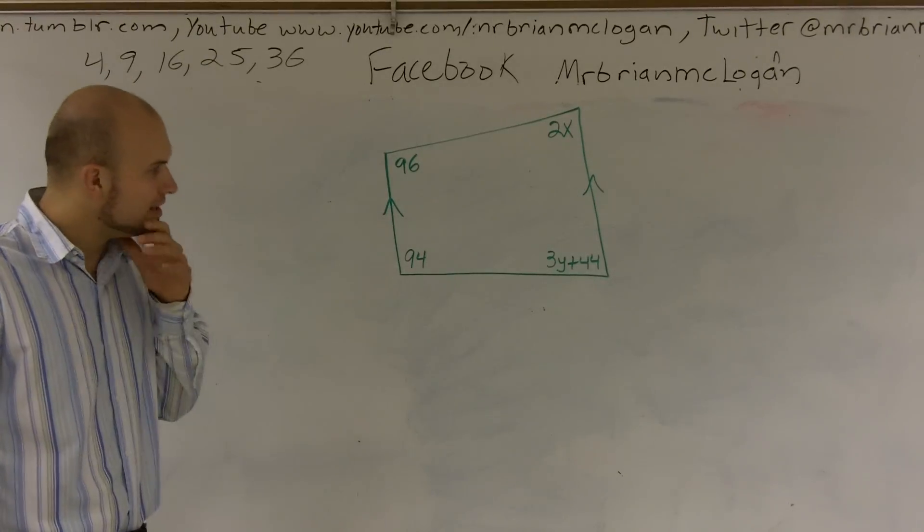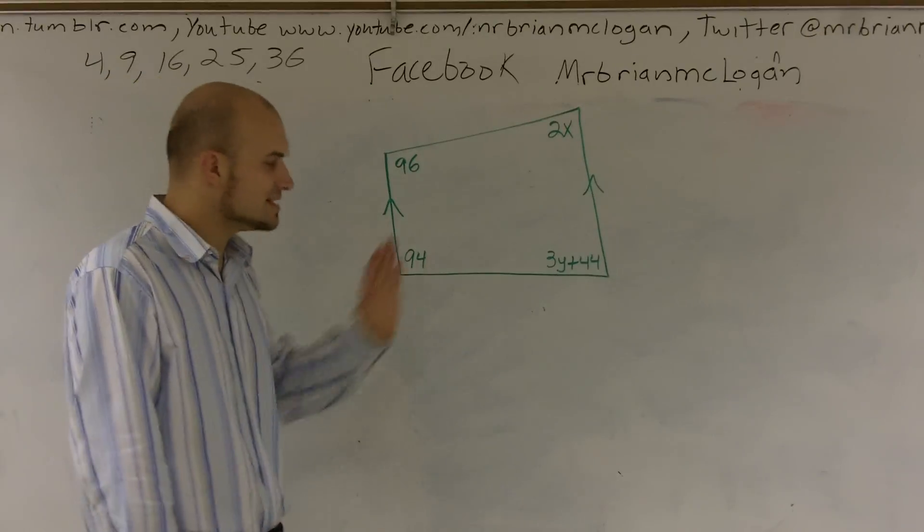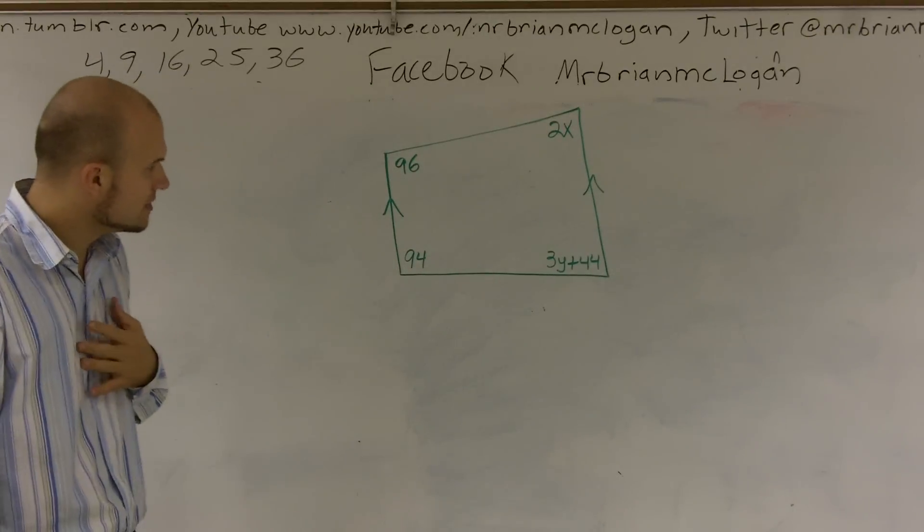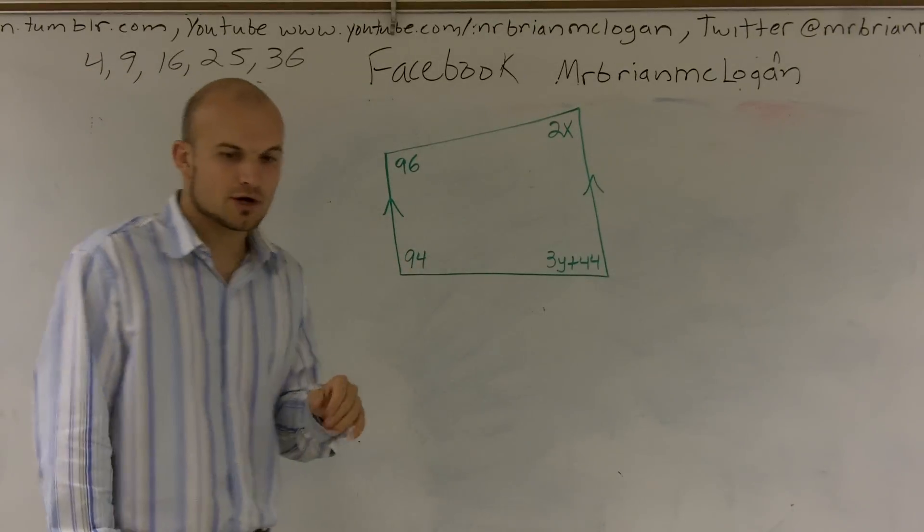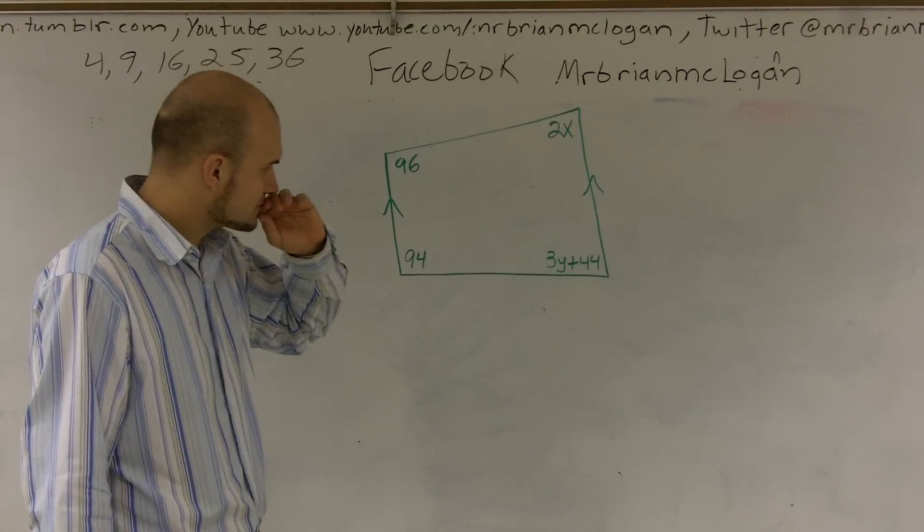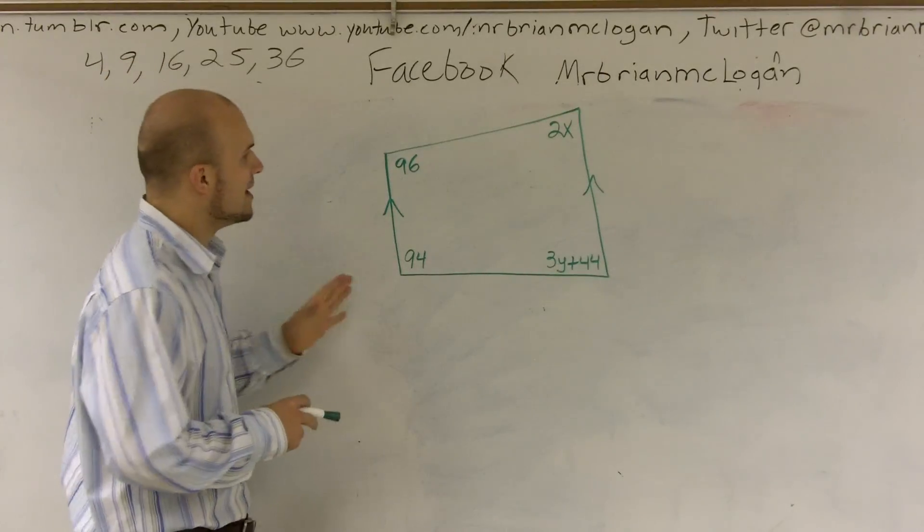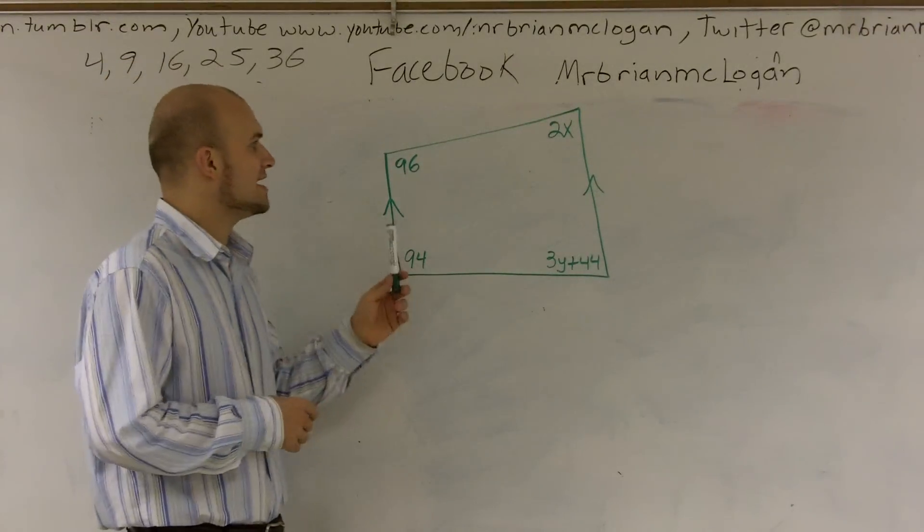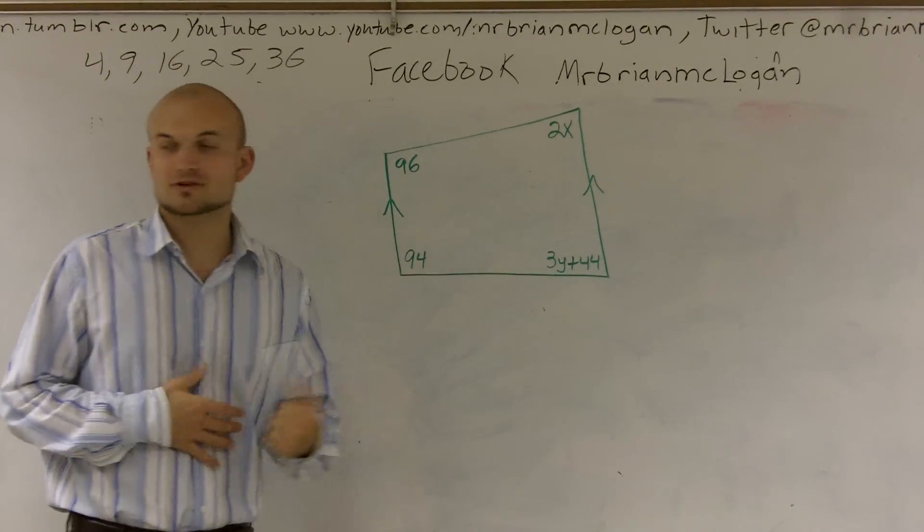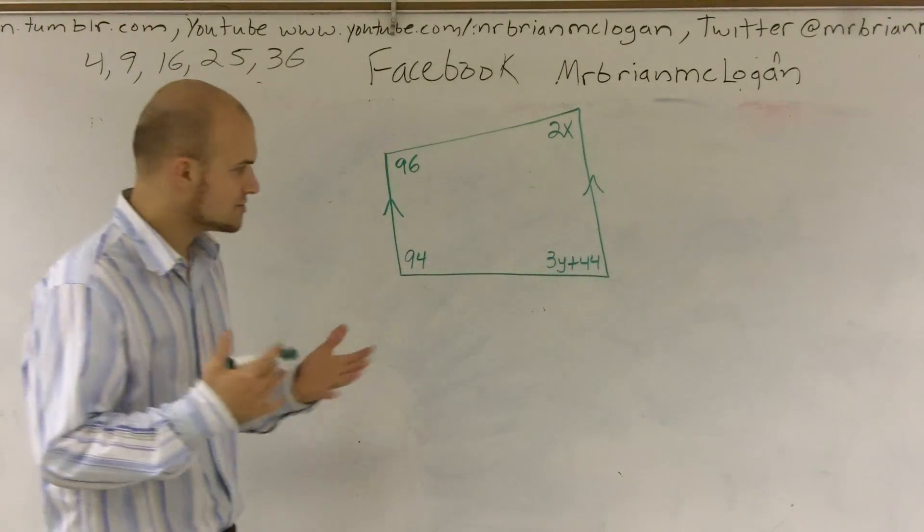What I'd like to do is show you how to solve for two given angles inside of this quadrilateral. A couple things we need to know about this. One thing is we know that in a quadrilateral all the angles add up to 360 degrees.